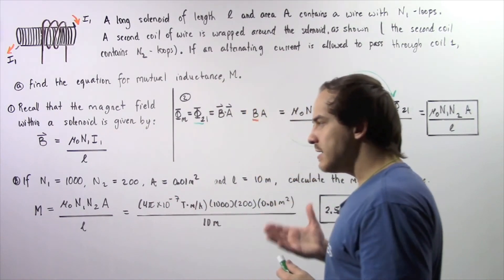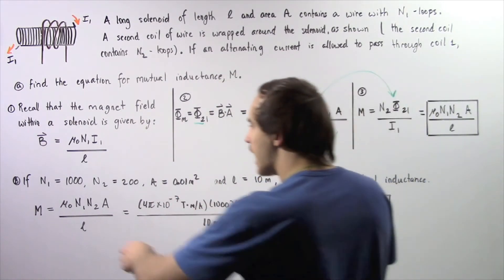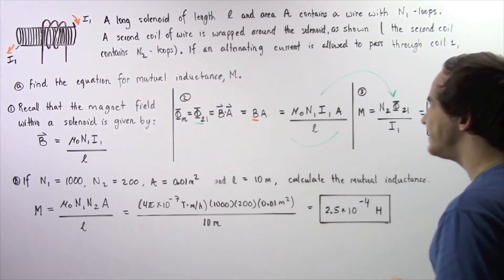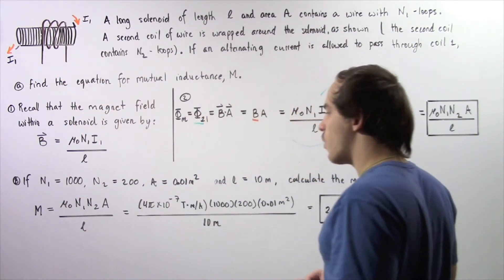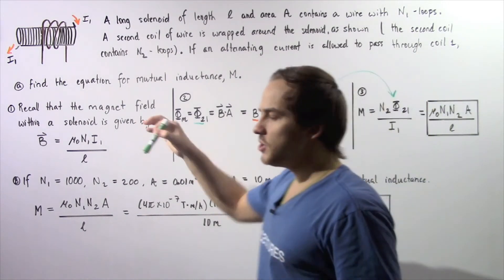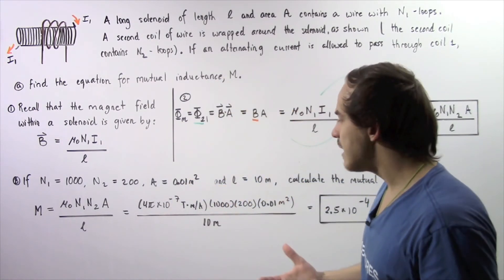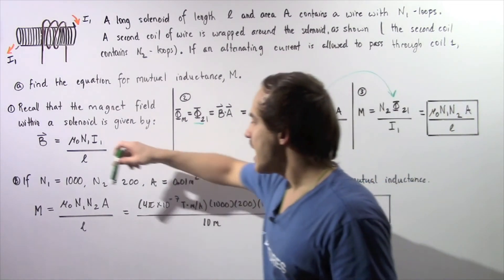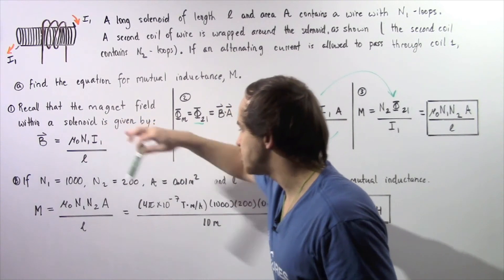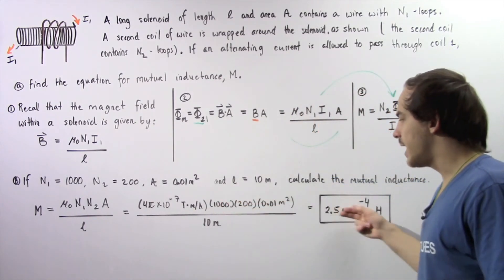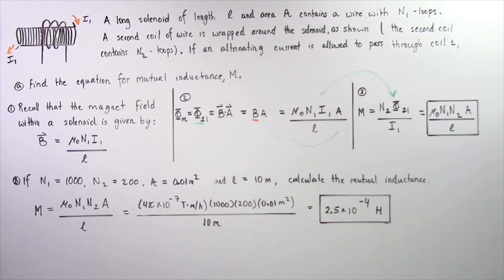Now let's move on to part B, where we apply this equation to solve for the mutual inductance of coil 2 as a result of coil 1. The permeability of free space mu-naught is 4π × 10⁻⁷ T·m/A. N1 is 1000 loops, N2 is 200 loops, A is 0.01 meters squared, and L is 10 meters. Multiplying and dividing, we get approximately 2.5 × 10⁻⁴ H, where H stands for Henry — the unit of mutual inductance.